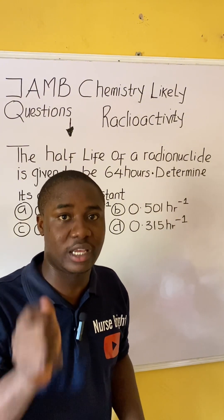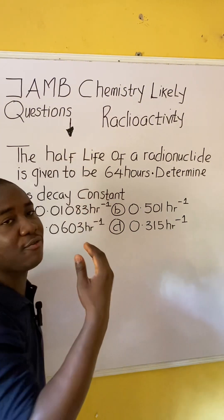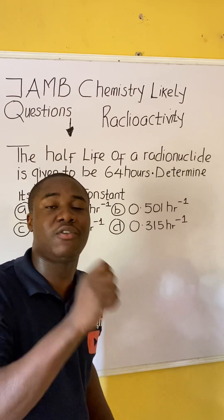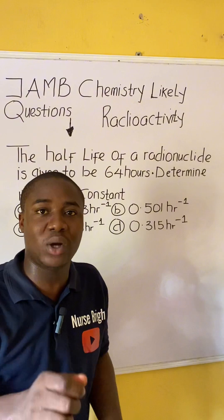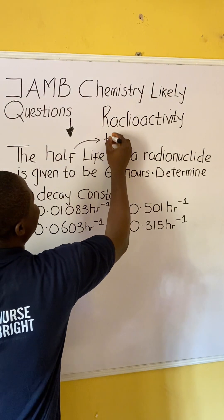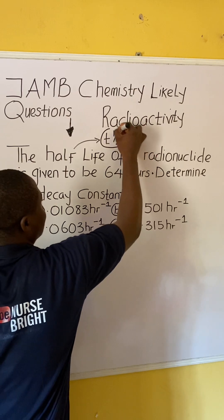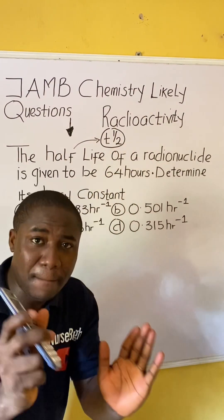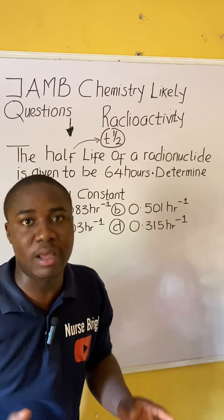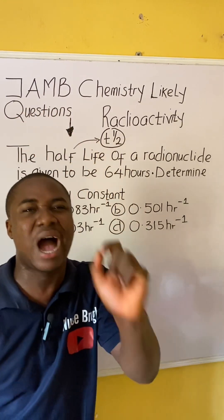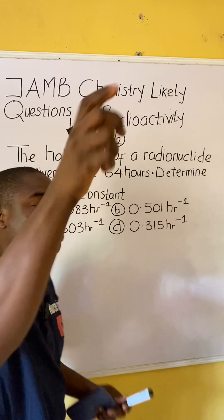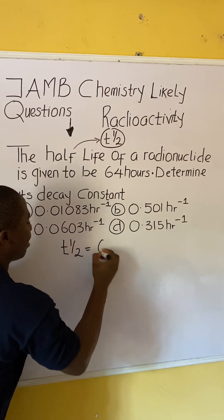To solve this question, listen carefully. The question says the half-life of a radionuclide is given to be 64 hours. First, it is important to know the symbol for half-life, which is T½. Take note — when solving, the symbol for half-life is T½. From this question, they gave us half-life to be 64 hours, so T½ = 64 hours.